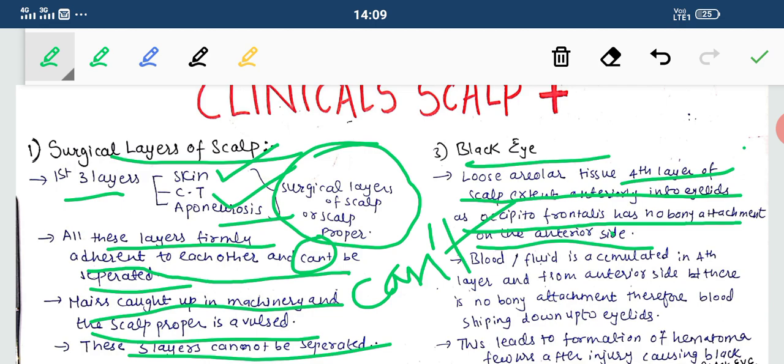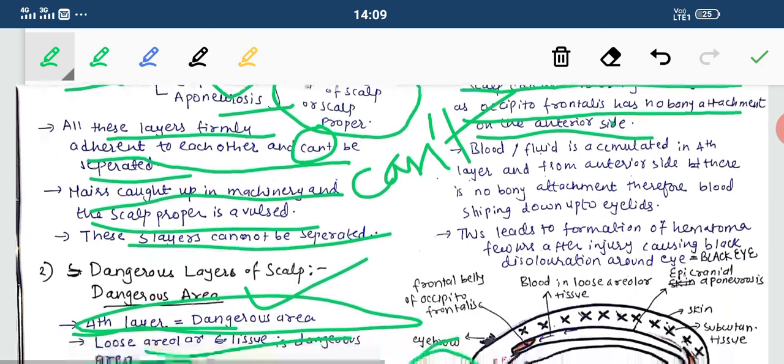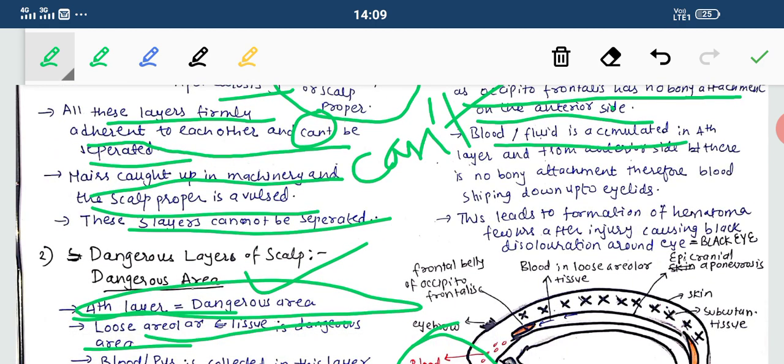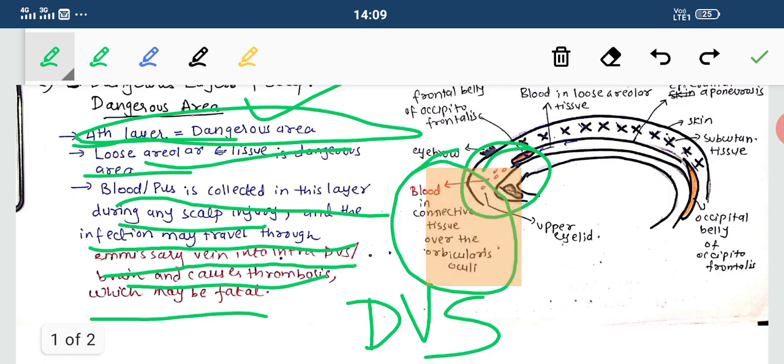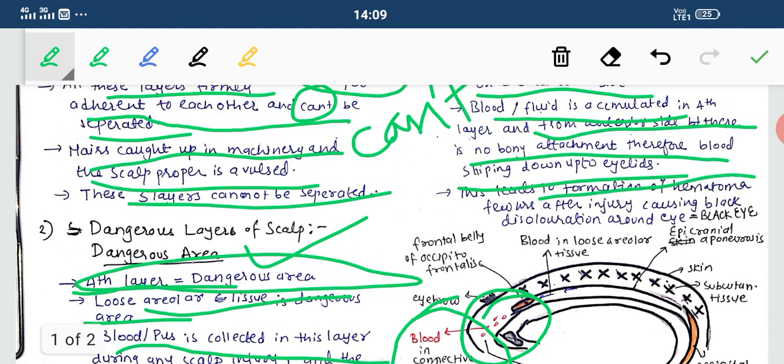Blood which is already accumulated in the fourth layer during injury does not have any anterior bony attachment, and therefore the blood slips into the eyelids. This is the eyelid, and blood is slipping down into the eyelids. This leads to formation of hematoma a few hours after the injury, causing black discoloration.